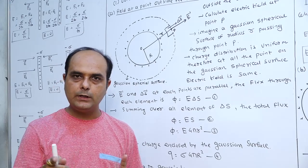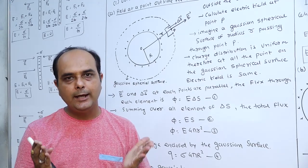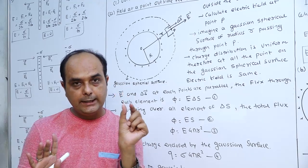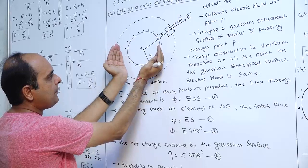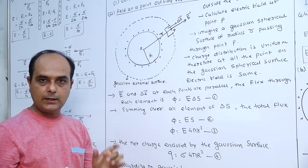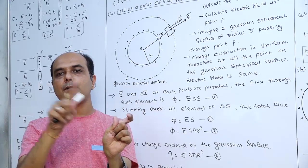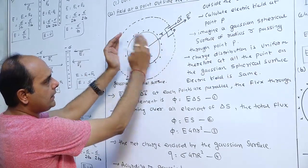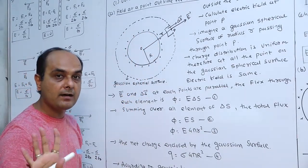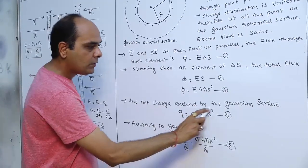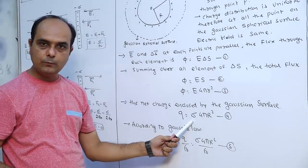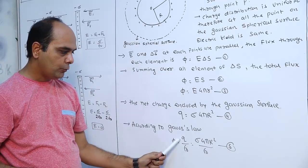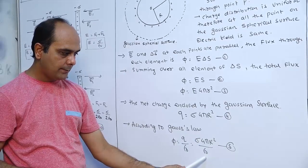Now applying Gauss's Law, we refer to Q — the charge enclosed by the Gaussian surface — which can be expressed using sigma. In a unit area, charge is sigma; for total area 4 pi capital R squared, the charge is sigma times 4 pi R squared. Therefore, the net charge enclosed by the Gaussian surface is Q equals sigma into 4 pi R squared, equation 4. According to Gauss's Law, phi equals Q by epsilon-zero, so phi equals sigma times 4 pi R squared divided by epsilon-zero, equation 5.